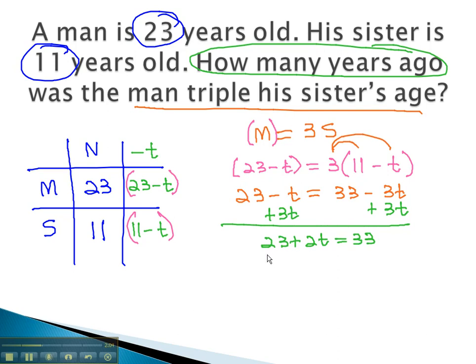This gives us 23 plus 2t equals 33. Next, we can subtract 23 from both sides. This gives us 2t equals 10. To get the t by itself, we simply divide both sides by 2. This gives t equals 5.